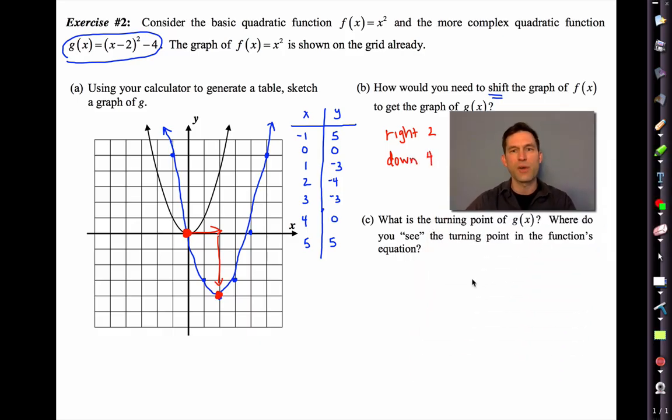All right. Now letter c asks an interesting question. It says, what is the turning point of g? Well, that's not a very interesting question. That's at 2, negative 4. Right? 2, negative 4. Then it says, where do you see the turning point in the function's equation? I'm going to write down the function's equation. I'm not going to write it down as g of x. I'm just going to write it down as (x minus 2)² minus 4. Well, the negative 4, that is as blatant as you get. There it is. The 2, that's a little bit weird because it's there, but it's being subtracted. We're going to explore that a little bit more.